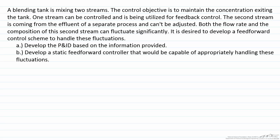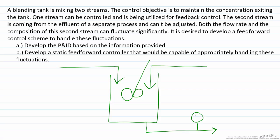First we'll develop the P&ID. We'll assume it's well mixed. We'll have one stream coming in and a second stream coming in and then a stream coming out. The feedback control part is going to try to control the composition by adjusting the flow rate of one of the streams.